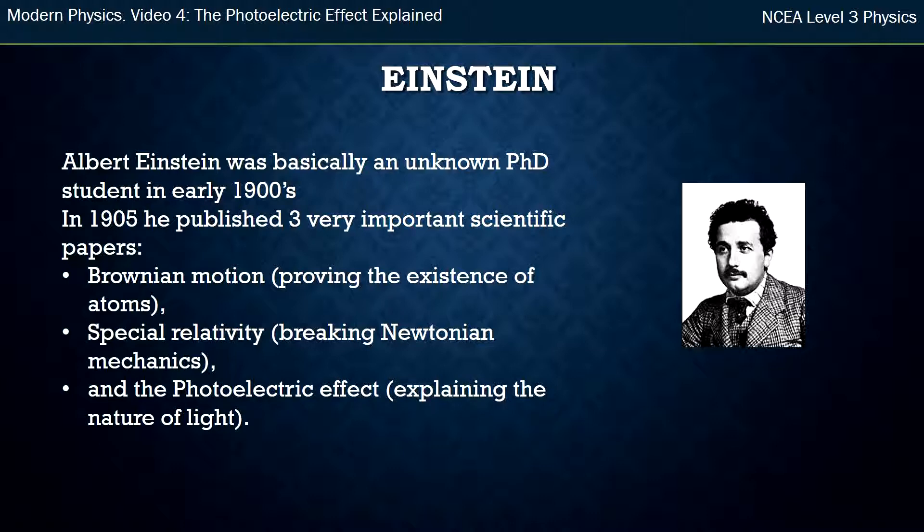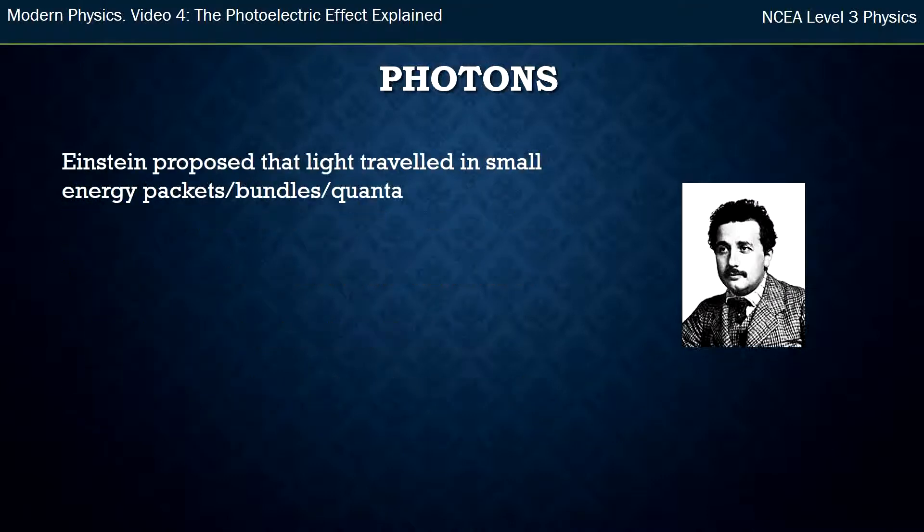So von Lennard was the person who came up with the experiment and the observations but couldn't explain it and it was Einstein who went on to explain or propose an explanation for what he found.